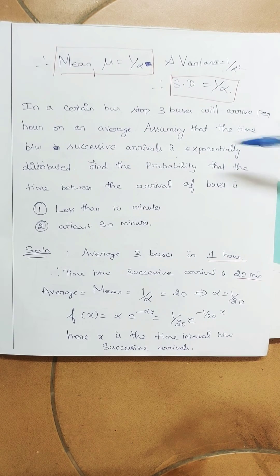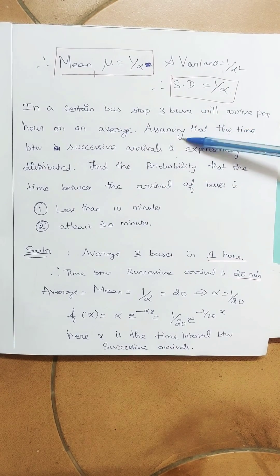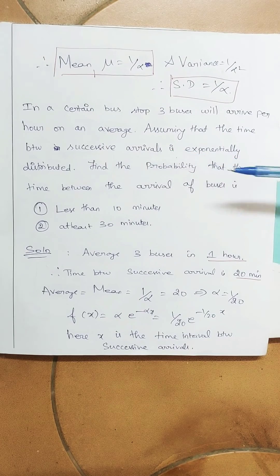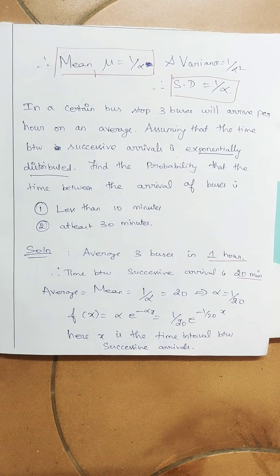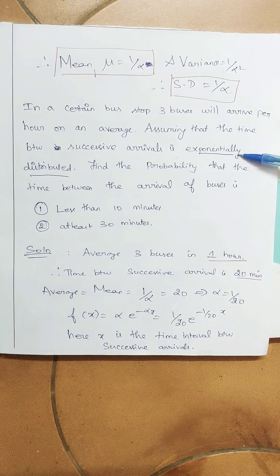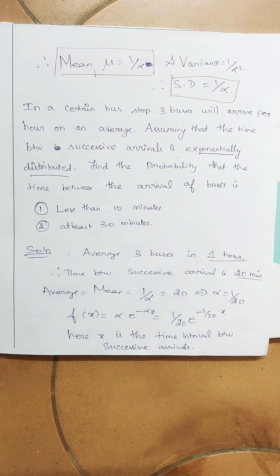Now we will see one problem. In a certain bus stop, three buses will arrive per hour on an average. Once I read the question, you can pause and think for a second. Three buses will arrive per hour on an average. Assuming that the time between successive arrivals is exponentially distributed — they have clearly mentioned 'exponentially distributed'. Find the probability that the time between the arrival of buses is: (a) less than 10 minutes, (b) at least 30 minutes.